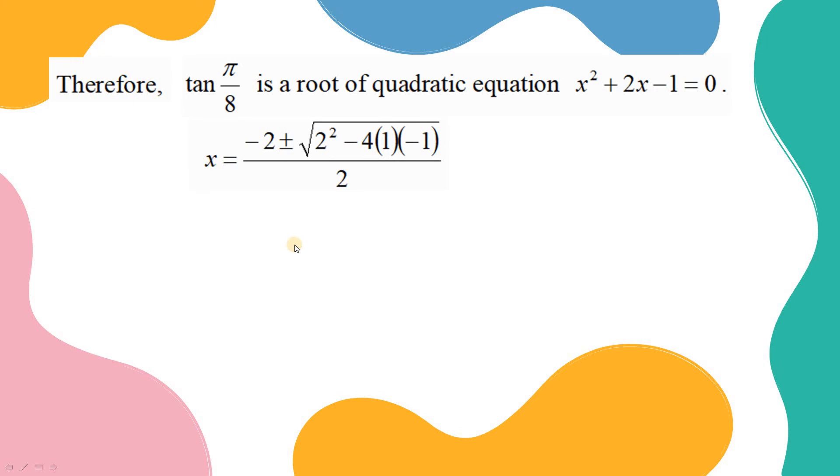And simplify. The square root of 8 equals 2 times square root 2. Factorize the 2 and cancel the denominator 2. We have x equals minus 1 plus square root 2, or x equals minus 1 minus square root 2.